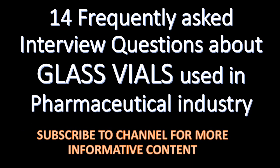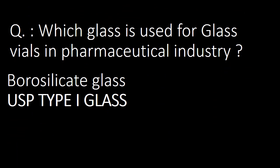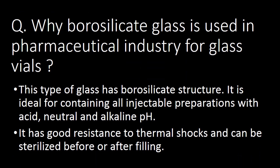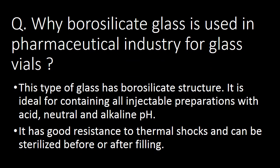Here are 14 very useful interview questions about glass vials used in the pharmaceutical industry. We will start with the very basic question: which glass is used for glass vials in the pharmaceutical industry? The answer is borosilicate glass, or USP Type 1 glass, is used for glass vials in the pharmaceutical industry.